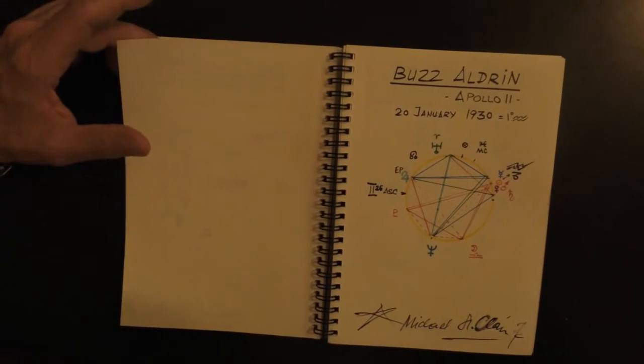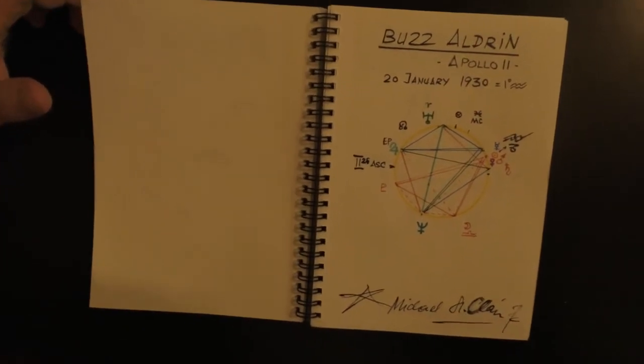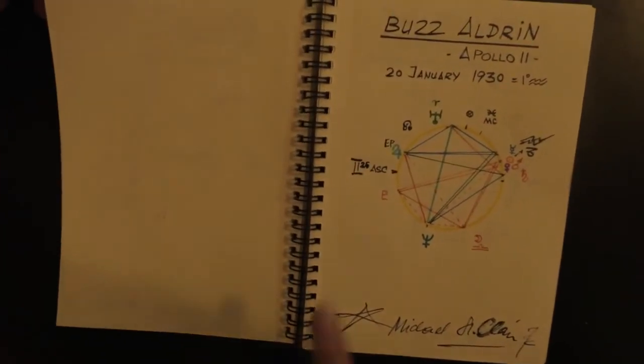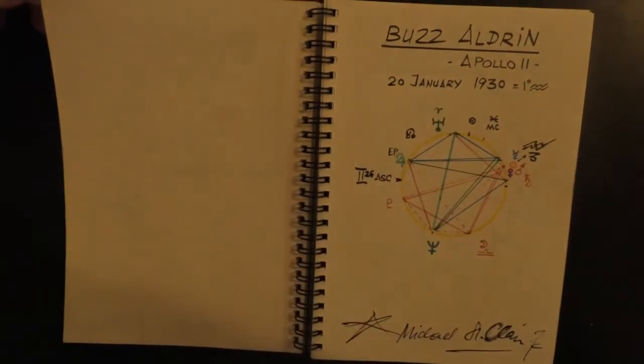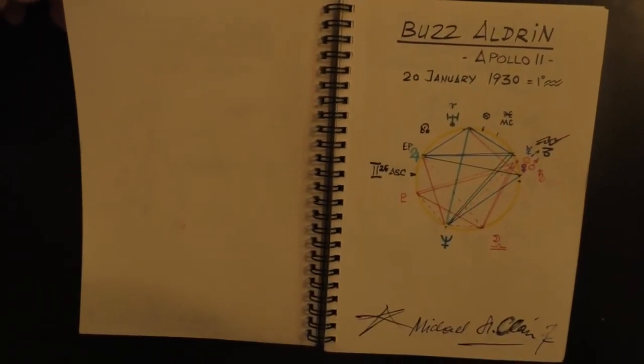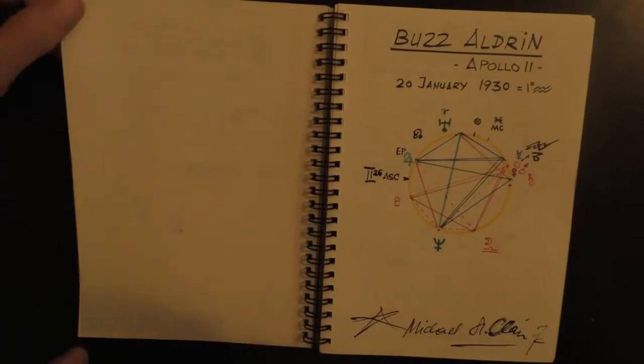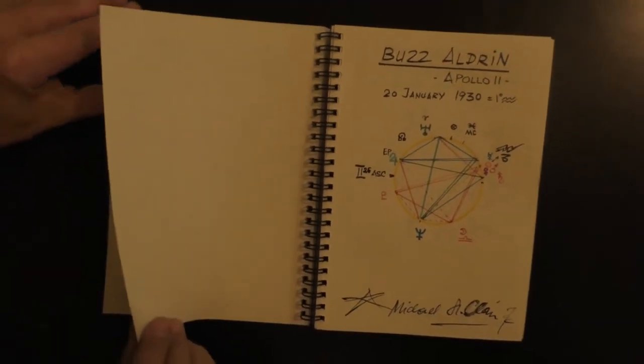Buzz Aldrin, Aquarian, born on the day that they inaugurated the Presidents, 20th of January. Gemini Rising, smart guy, he was there.